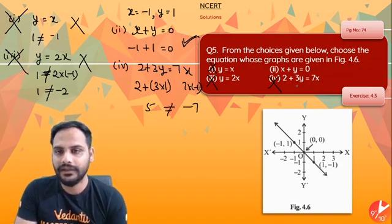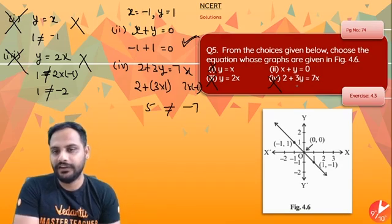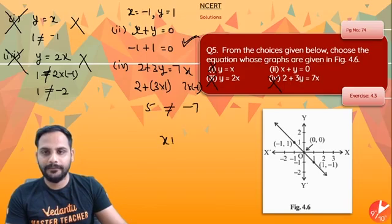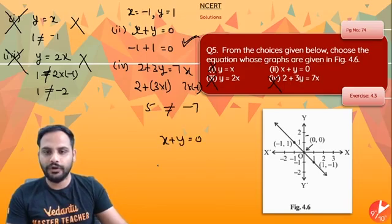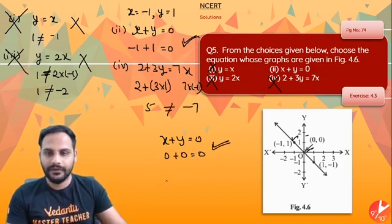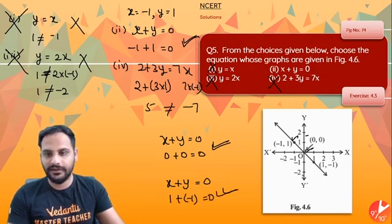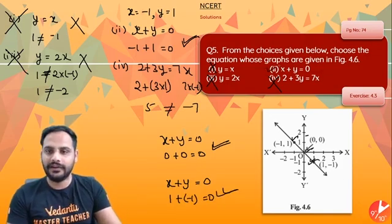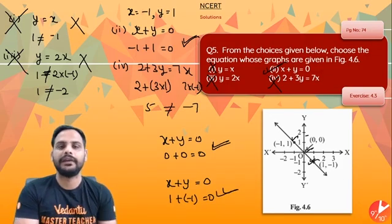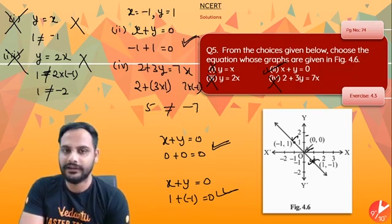But see, if we want to be sure, we need to check that this x plus y is satisfying all the three points. So in this x plus y equal to 0, put 0 comma 0. So 0 plus 0 is equal to 0, yes sir. Second point is also satisfied. Third point, x plus y equal to 0, put x as 1, y as minus 1, yes sir. Still it is satisfying. So all the three points are satisfying, that means yes sir, x plus y equal to 0 is your correct answer.